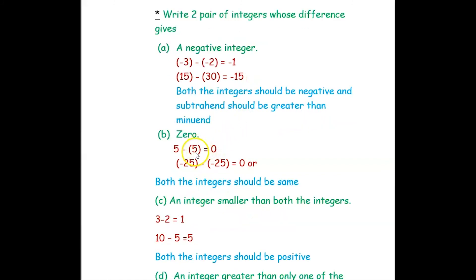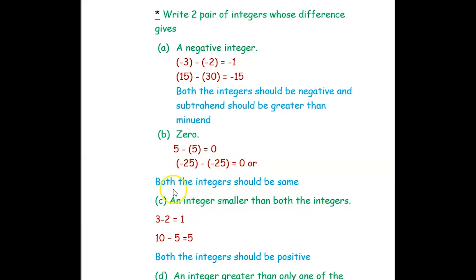The next question is to find two integers such that their difference is 0. If you subtract two integers the answer should be 0. So 5 minus 5 equals 0, and negative 25 minus negative 25 equals 0. So both integers should be the same.